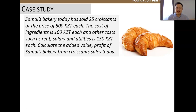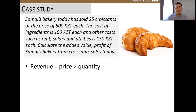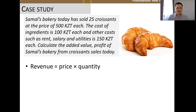Now let's look at a particular example: Samal's bakery. They're selling croissants at a price of 500 Tenge, selling 25 croissants on average. The cost of ingredients and other costs are 100 Tenge and 150 Tenge respectively, and we're asked to calculate the added value. So, what is revenue? Revenue is not profit. Revenue is the amount of money produced by selling your product — the more you sell at a certain price, the more revenue you have. Therefore, revenue equals price times quantity.